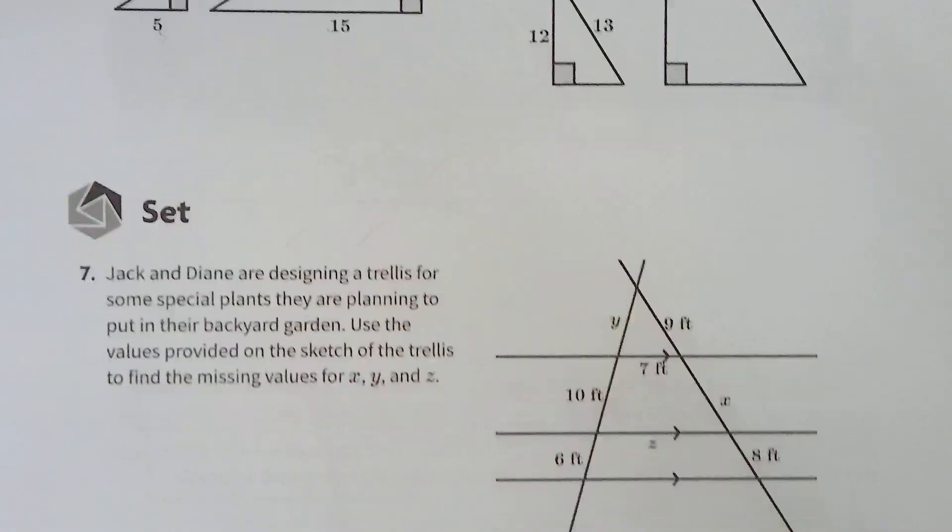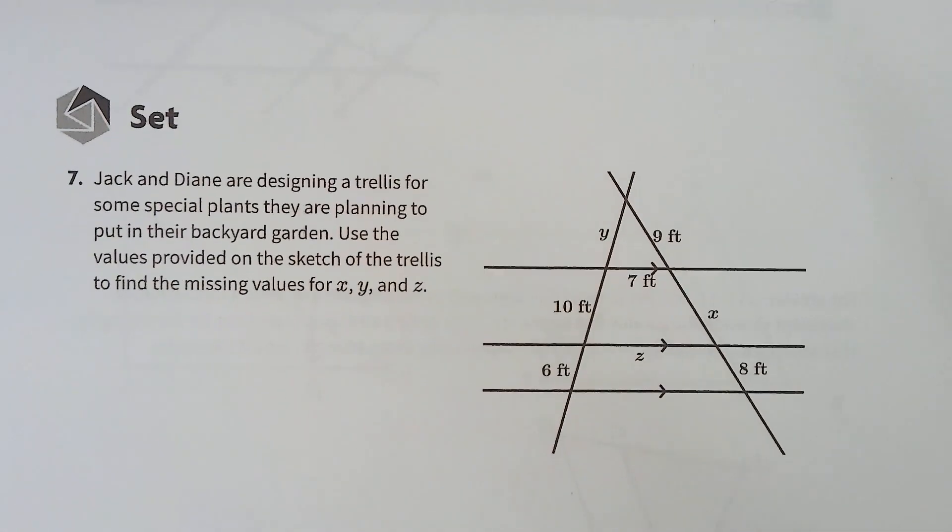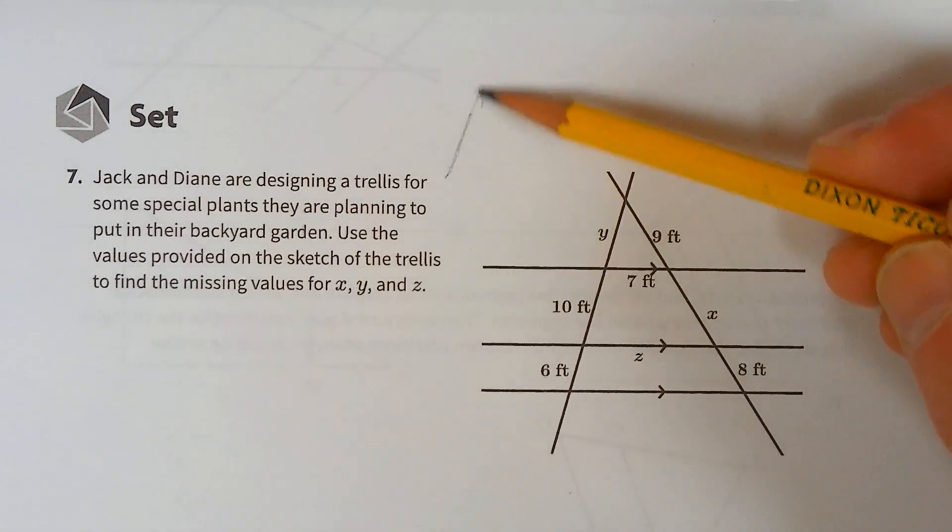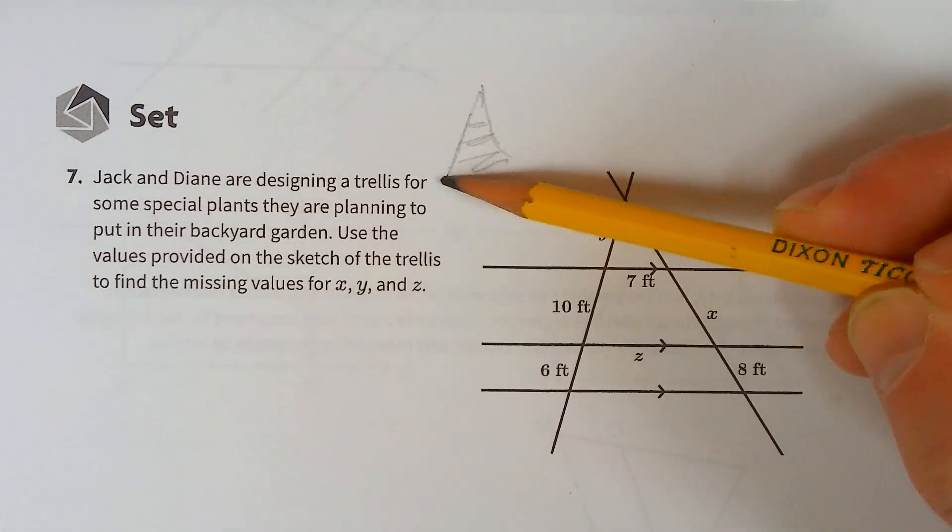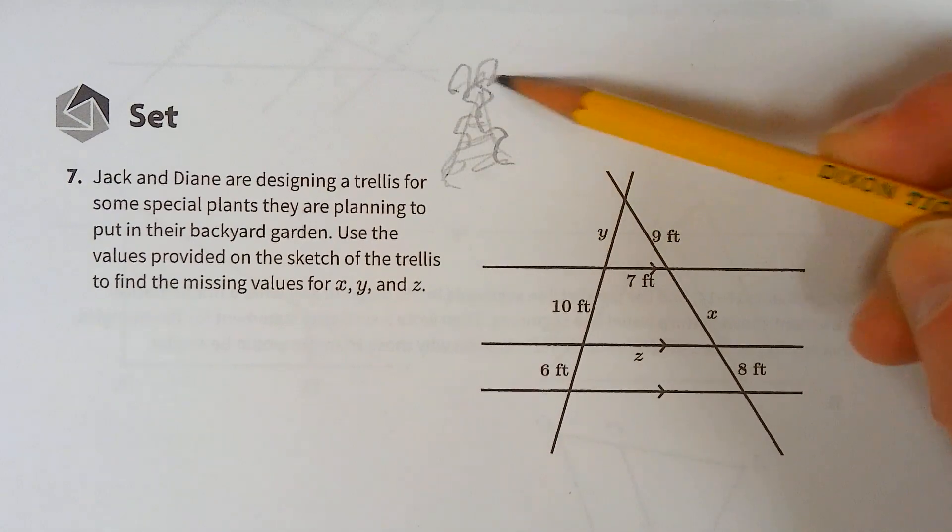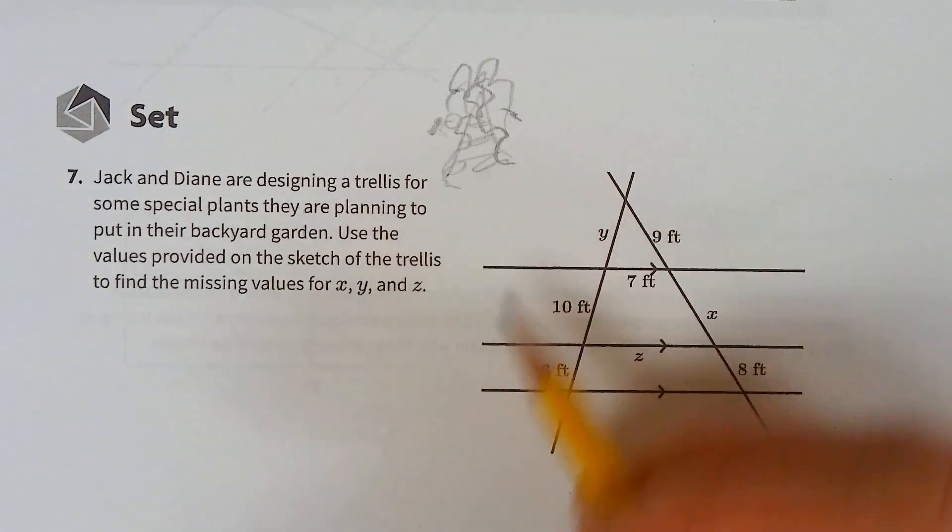Jack and Diane are designing a trellis for some special plants they are planning to put in their backyard garden. Use the values provided on the sketch of the trellis to find the missing values of x, y, and z. You guys know what a trellis is? It's like a thing that plants can grow on for support, like pea plants.